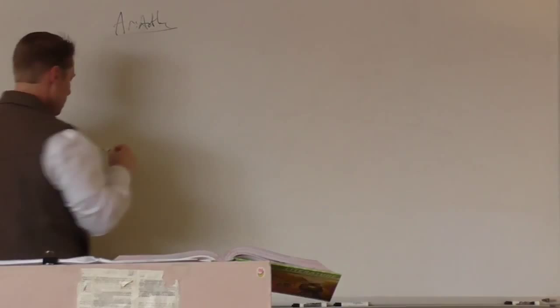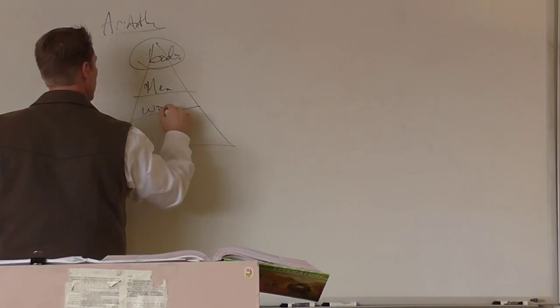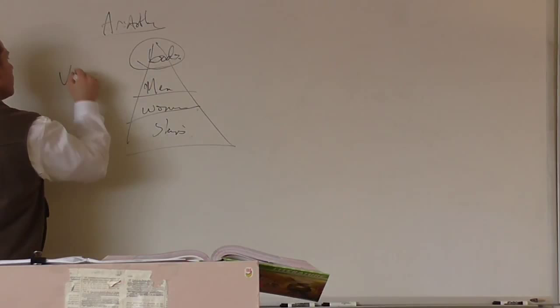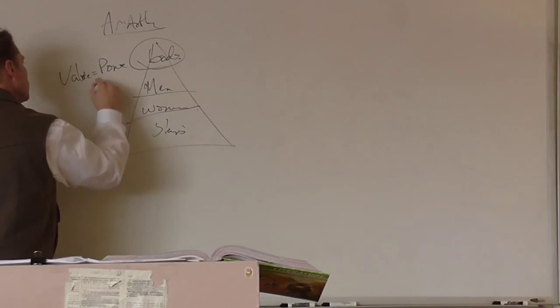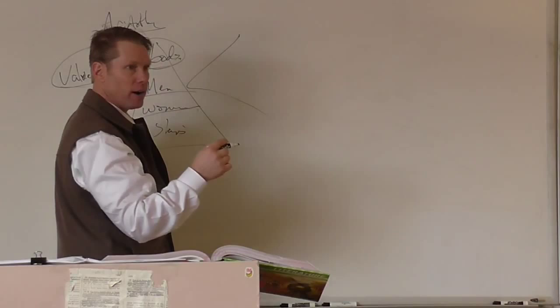Aristotle called this the great chain of being. And the way he played this game, you've seen this before I think, is with this pyramid thing. Where at the top he put the gods, then he had men, then he had women and slaves and all that other stuff. Now the way this works is value equals power going up. So the higher you are on this pyramid, the more value, the more power.